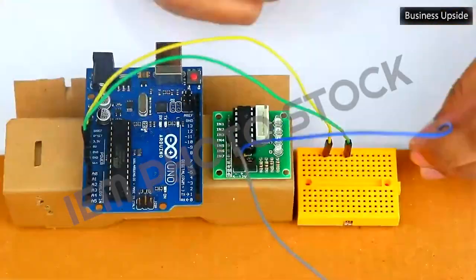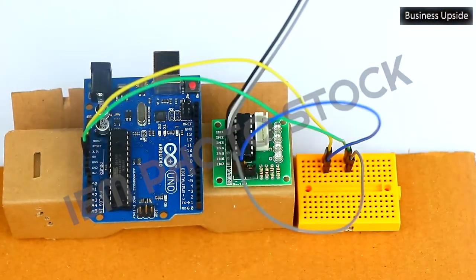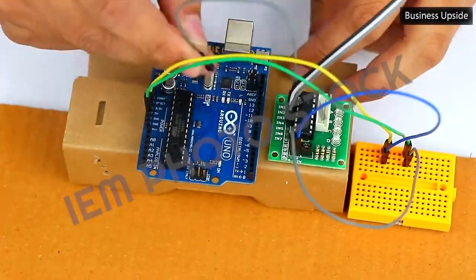Connect a jumper from 5 volts pin of Arduino to one rail and from ground of Arduino to another rail of the breadboard.